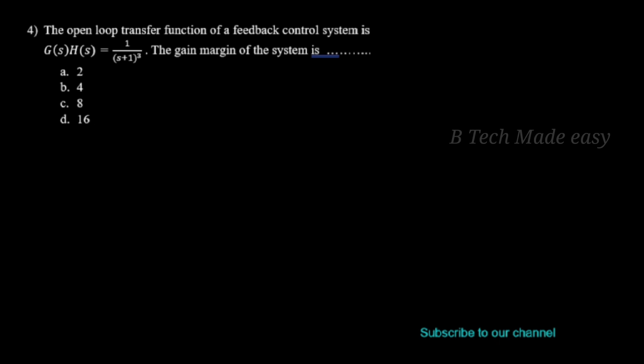We need to find the gain margin. Gain margin of the system is defined as how much the system gain can be increased so that the system moves on the edge of stability. This gain margin can be determined from the phase crossover frequency. The equation for gain margin is: GM = 1 / |G(jω)H(jω)| at ω = ωpc. This is the equation to find out the value of gain margin.